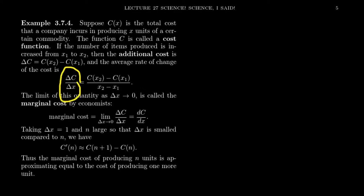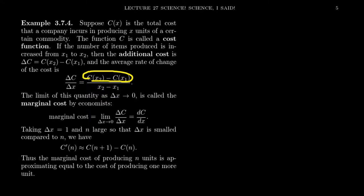Related to that is the average rate of change of the cost function: delta C over delta x. This is the additional cost divided by the production change — for example, raising from 10,000 to 20,000, cost divided by 10,000 gives you the average cost per additional unit produced. If we take the derivative, that is the limit as delta x goes to zero, we get the so-called marginal cost. This is key: whenever you see the adjective 'marginal' used to describe a function in economics, it means you're taking the derivative. Marginal cost is the derivative of cost, marginal revenue is the derivative of revenue, marginal profit is the derivative of the profit function.